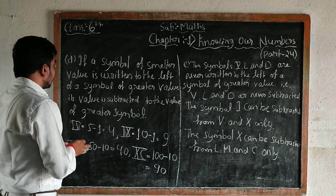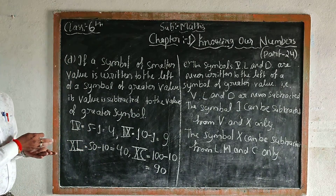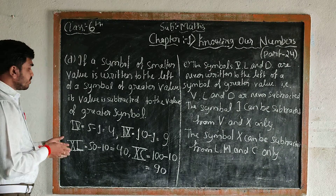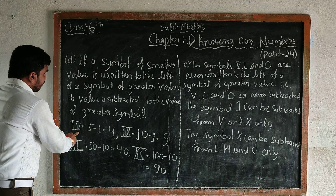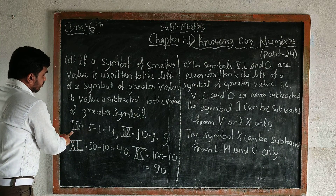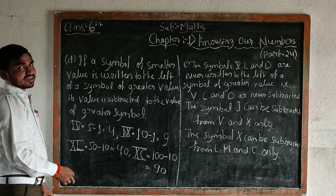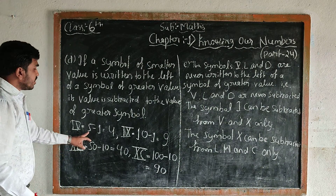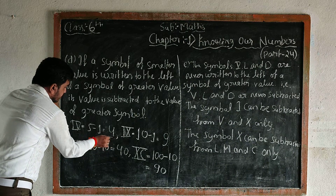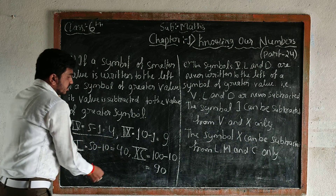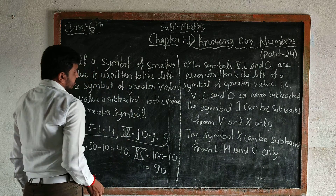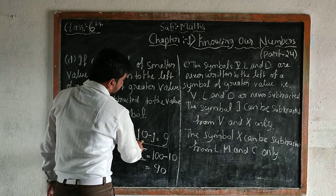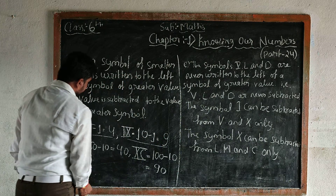I have already explained this in the previous class. When we write 5 before 1, the values are subtracted. 5 minus 1 is equal to 4. Similarly, X minus 1 equals 9.